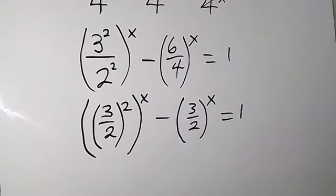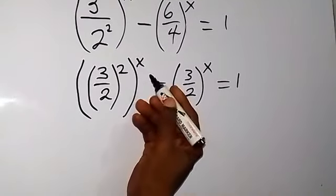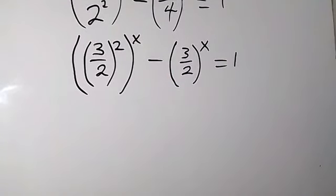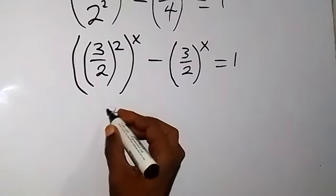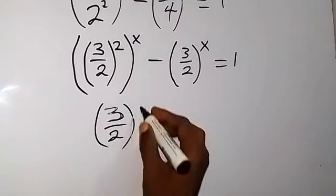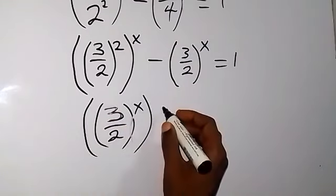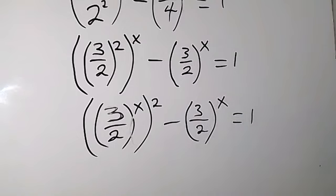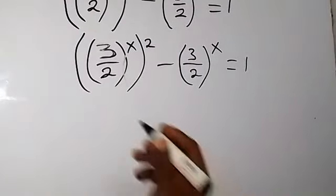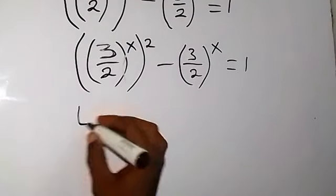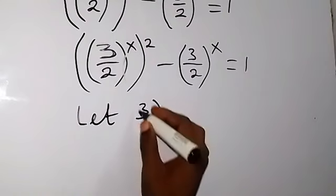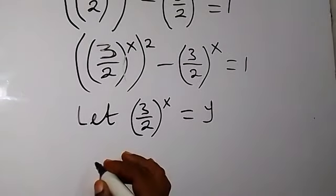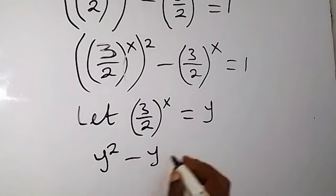We reduce this by dividing by 2, and since the powers multiply we can change it. So we have 3 over 2 raised to power x, all raised to power 2, minus 3 over 2 raised to power x, equals to 1. We can see that we have 3 over 2 raised to power x — we can use a letter to represent that. Let 3 over 2 raised to power x equal y.